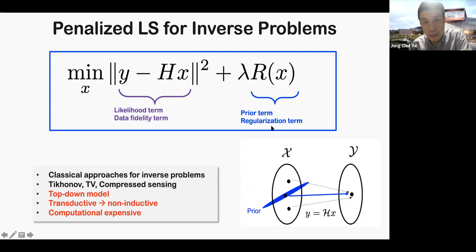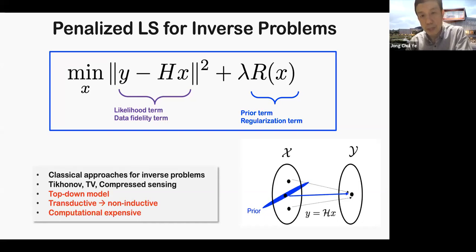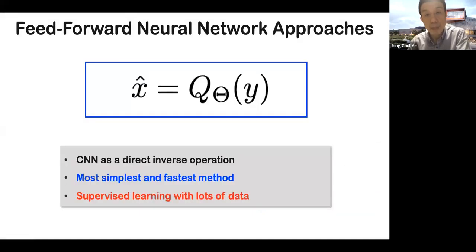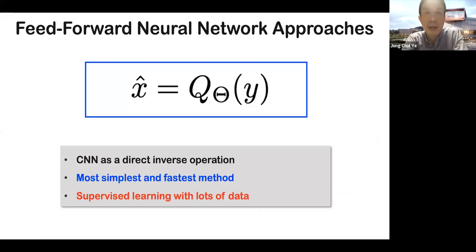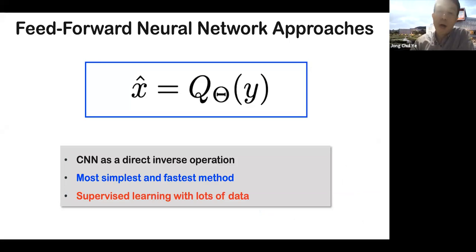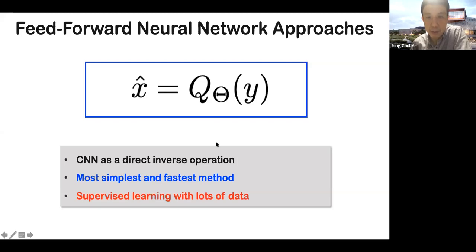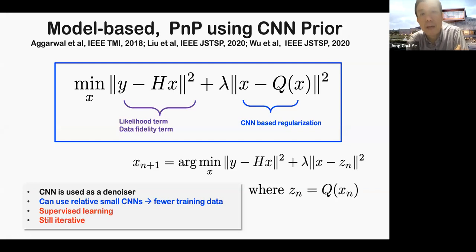There are several limitations to the classical penalized least square approach. The prior term is based on a top-down mathematical model, and for every new measurement Y you need to solve the optimization problem again, which is computationally expensive — this is a transductive approach. Neural networks have many advantages: for a given Y you can directly estimate the unknown image X in a feed-forward manner. However, supervised training usually requires a lot of paired data to achieve accurate reconstruction results. To address this, there are model-based and plug-and-play approaches that use a CNN-based regularization term, still requiring less complex networks and less training data.